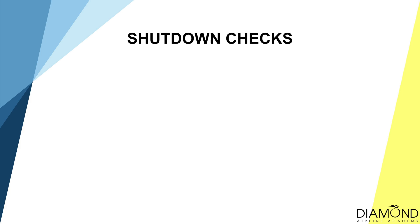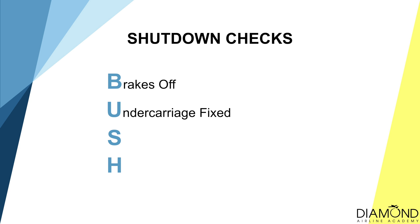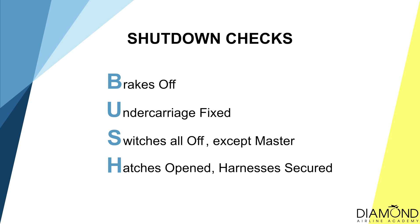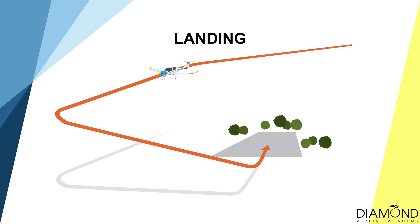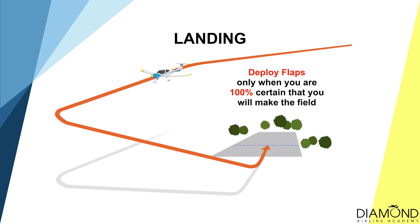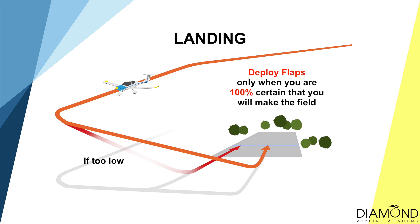Lastly, conduct the shutdown checks — the BUSH checks. B-U-S-H: Brakes off, Undercarriage is fixed, Switches all off except master — because if we need to lower the flaps, it requires electricity. Hatches open, Harnesses securely fastened. When lowering flaps, only lower flaps when you are 100% sure you will reach the field, because flaps will increase aerodynamic drag dramatically, reducing the gliding distance.